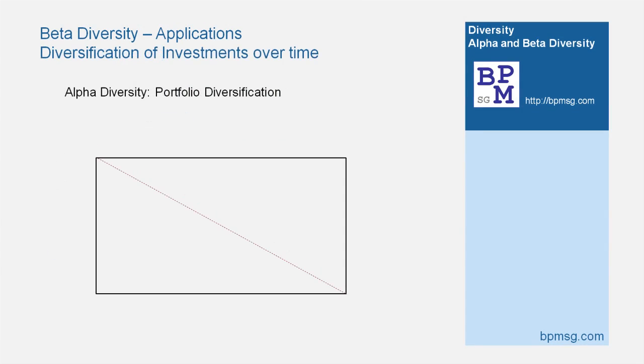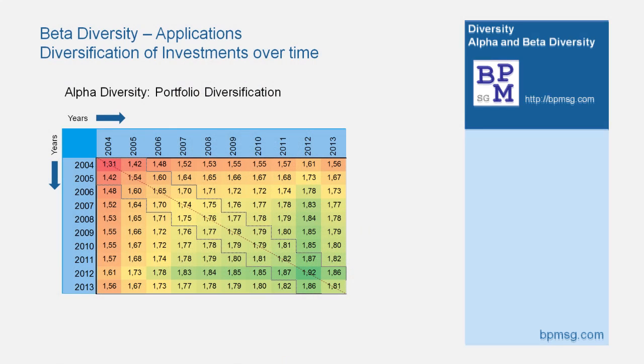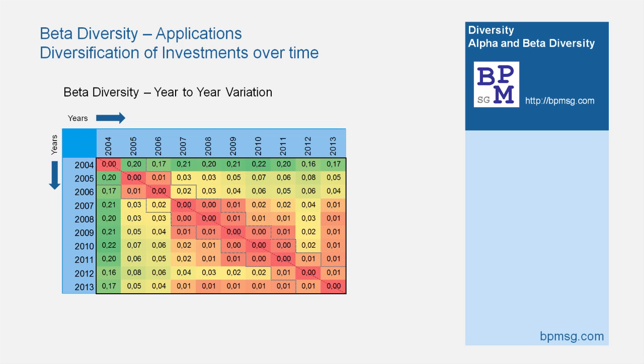Based on this analysis, we could use the clustering of sales locations to develop common marketing measures for each cluster of similar markets. As another example, let us investigate the diversification of a finance portfolio over time. Our strategy was to diversify the investment by spreading into different classes of financial instruments like equity, money market, bonds, and fixed income. From year 2004 to 2013, alpha diversity changed from 3.7 to 7. Beta diversity shows that the diversification was achieved in steps of two and three year changes.